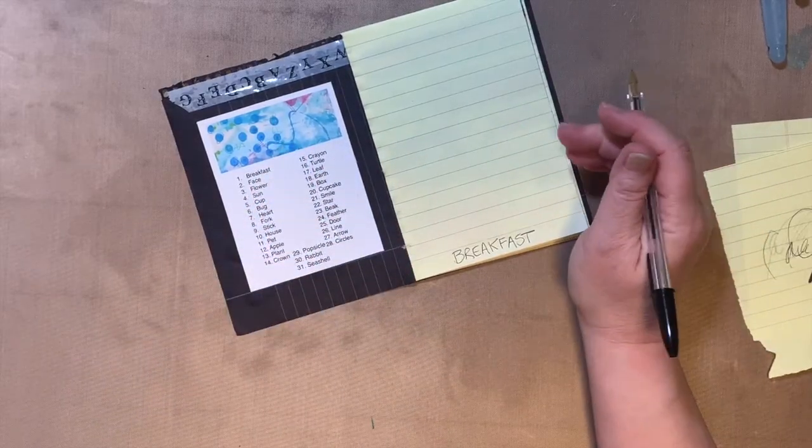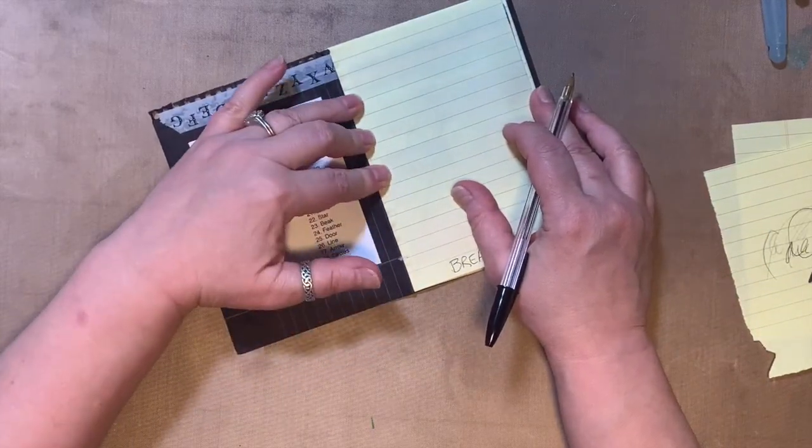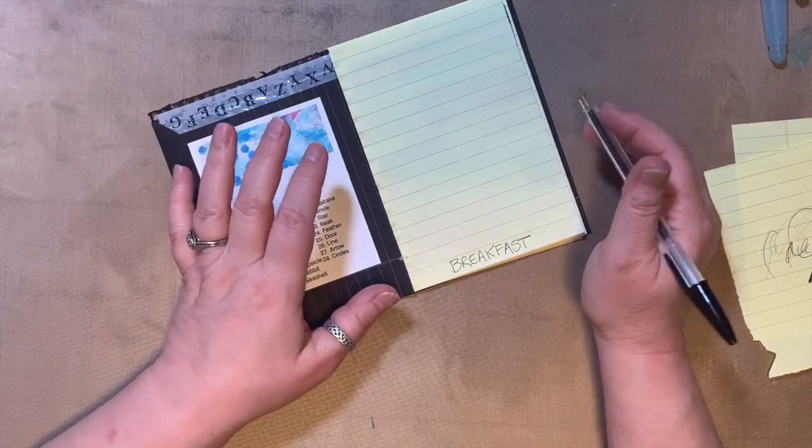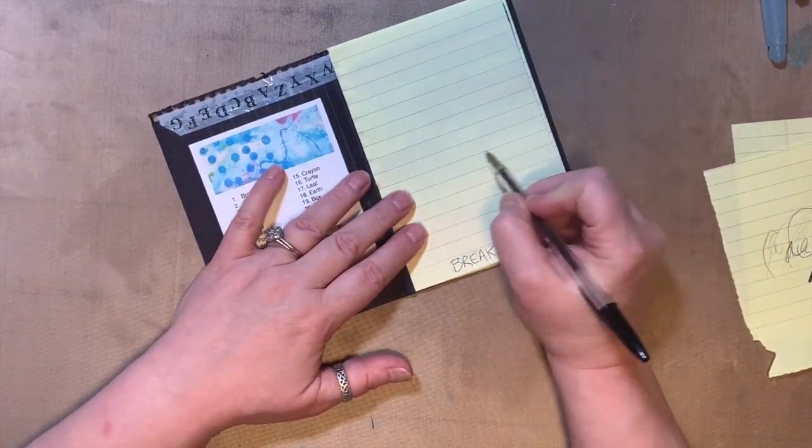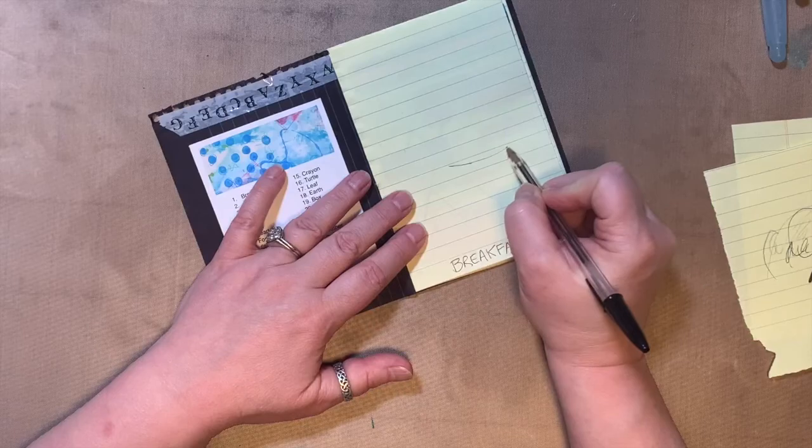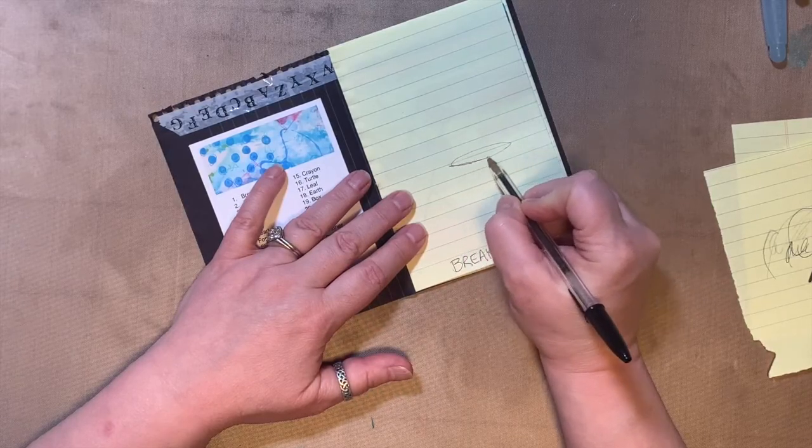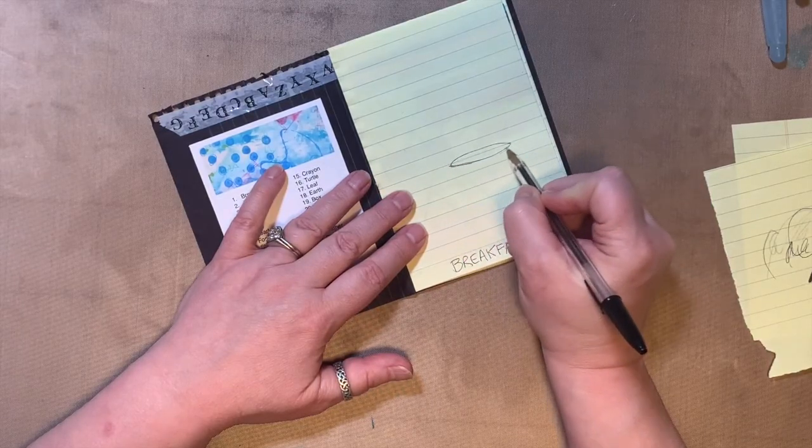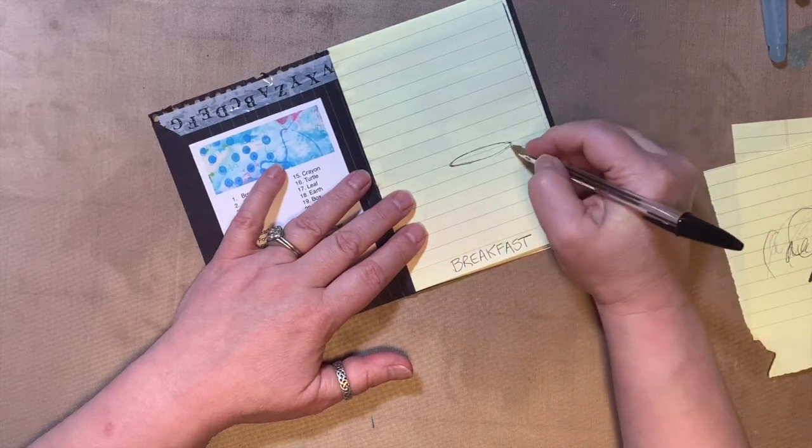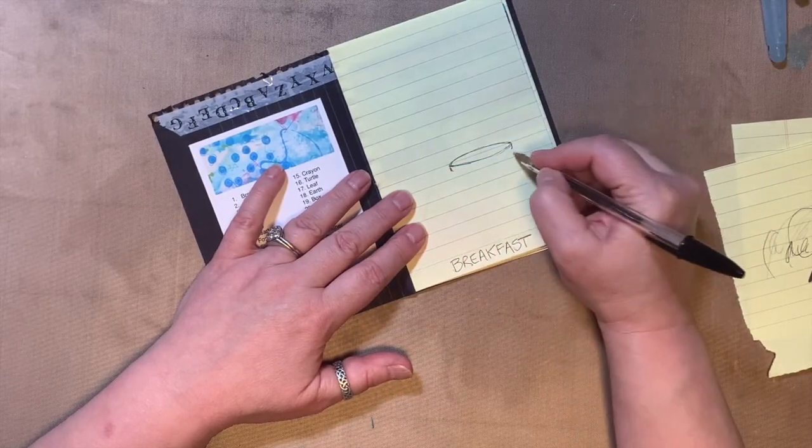We're going to draw a little picture of my breakfast. Whatever you had for breakfast, you want to draw something like that. I had a bowl of yogurt, so I'm going to draw a little bowl. I'm going to draw an oval shape here - you could totally do this in pencil if you want to.